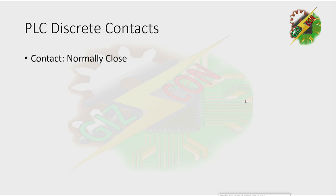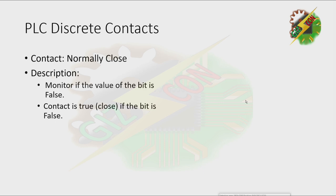Next, we have the normally close. It monitors if the value of the bit is false — the contact is true or closed if the bit is false. This is the symbol for normally close, and it is also equivalent to the normally close switch.